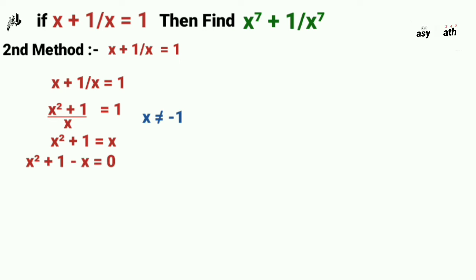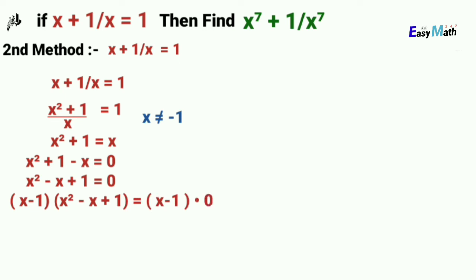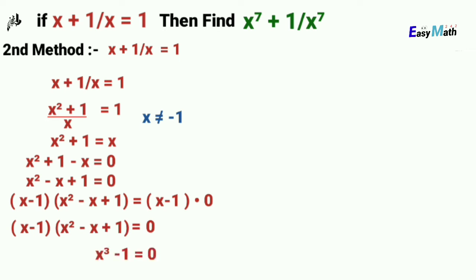That can also be written as x squared minus x plus 1 equals 0. Now multiplying both sides by x minus 1. Since any number multiplied by 0 is 0, the right-hand side remains 0, and the left-hand side becomes the cubic formula x cubed minus 1. This means x cubed equals 1.